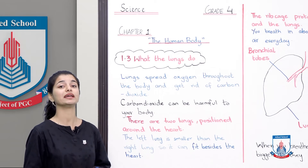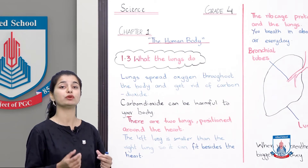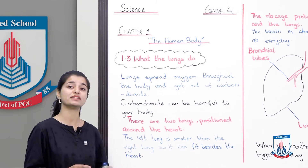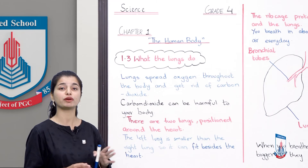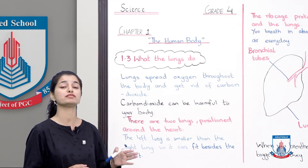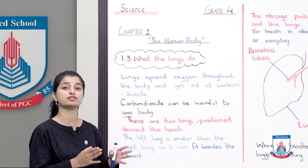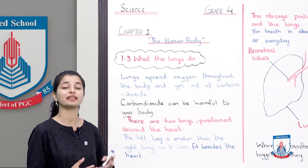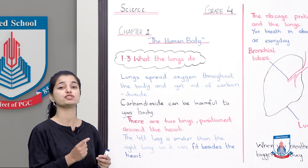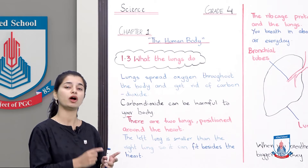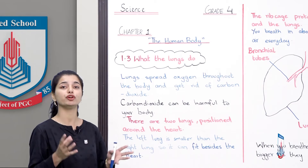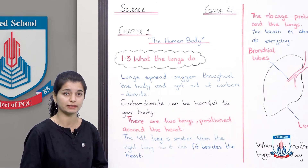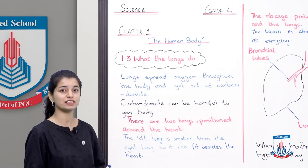The left lung is smaller because the heart is positioned slightly to the left side. So the left lung is smaller and the right lung is bigger, to give the heart its proper space.